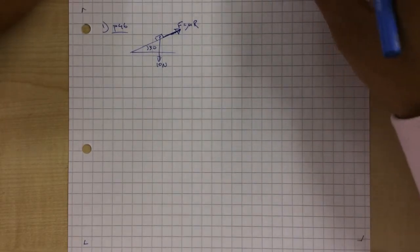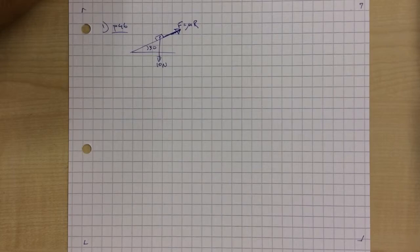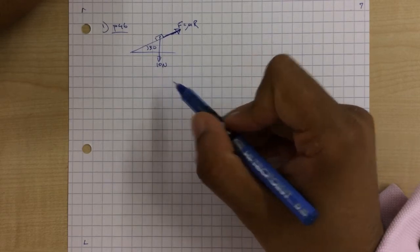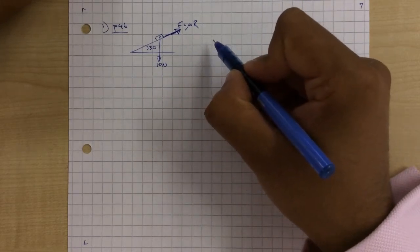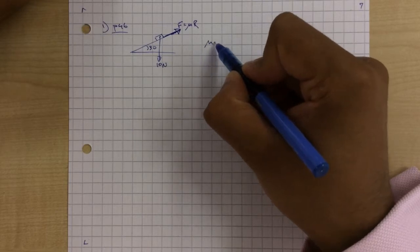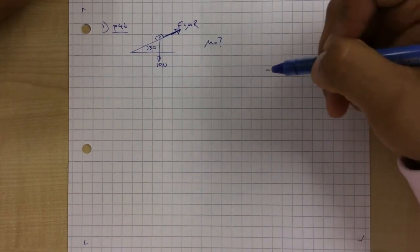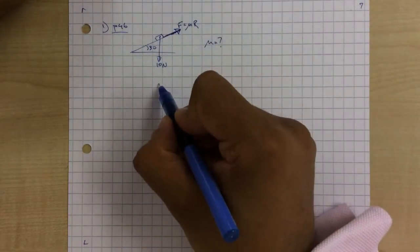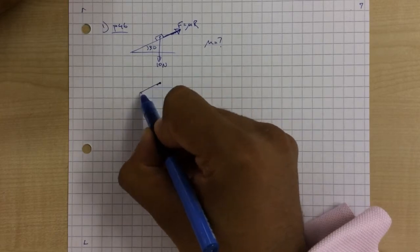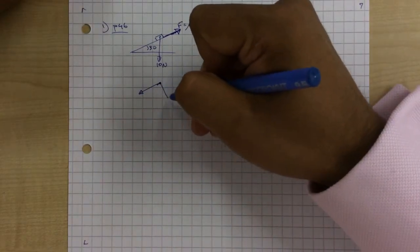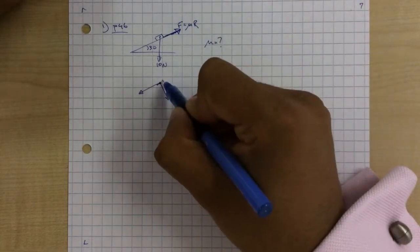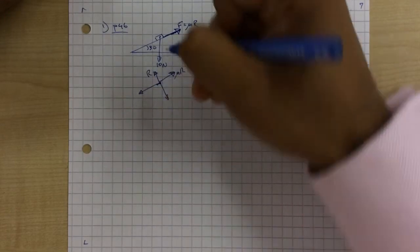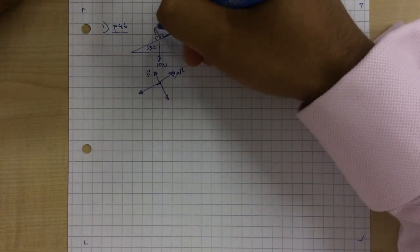This is a particle of weight 10 newtons. We need to calculate the value of the coefficient of friction, so mu equals R is the question. The weight of 10 newtons is split along the plane and perpendicular to it. We've got our friction F, which is mu R, acting up the plane, and going perpendicular we have our normal reaction R.